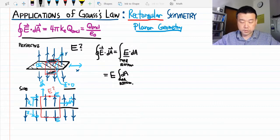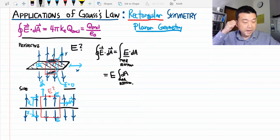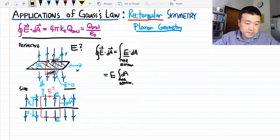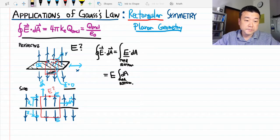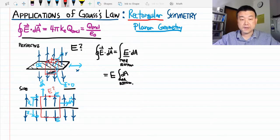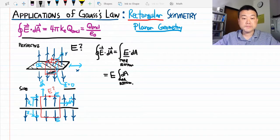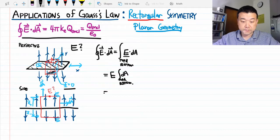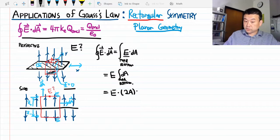Okay, so to be able to do this integral, I need to specify some parameters. Let's say that these top and bottom surfaces had area A. As I said, the shape doesn't actually matter. So I have two of those surfaces. So the left-hand side of Gauss's law becomes electric field times 2A.